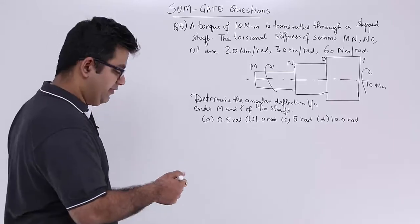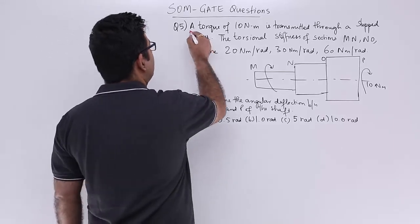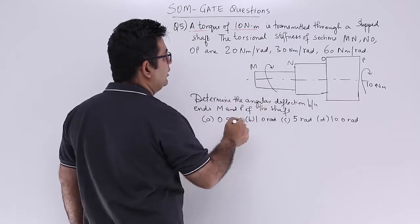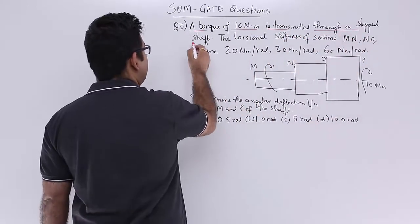Now let's come to question number 5. The question says a torque of 10 Nm is transmitted through a stepped shaft.